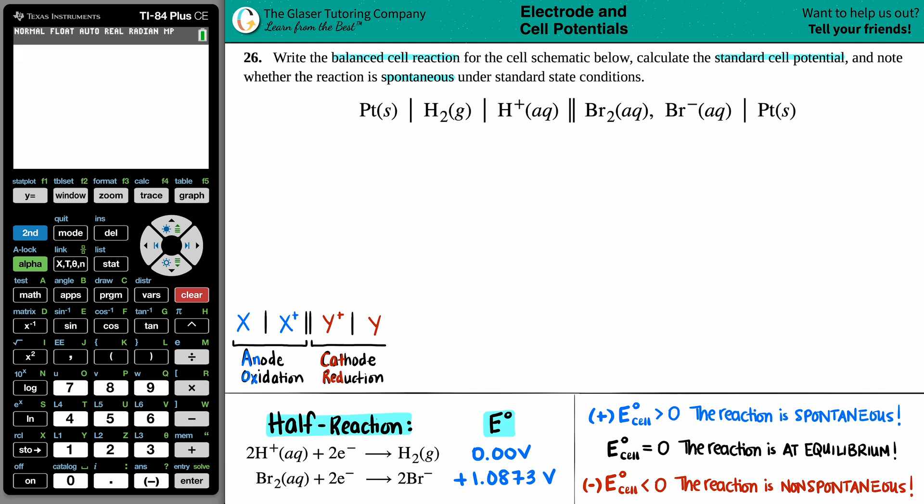Now, in this case, we do see that we have some platinum solids going on here. These platinums are only here because your anode and your cathode did not have a solid in there. So whenever you don't have one component that's a solid that's acting as the electrode, you need to add a solid in there.